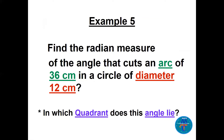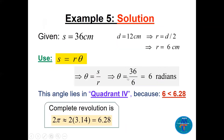Example: find the radian measure of the angle that cuts an arc of 36 centimeters in a circle of diameter 12. The second part asks in which quadrant this angle lies. We have s = 36 cm and diameter = 12, so radius r = 6 cm. Using s = rθ, theta equals s over r equals 36 over 6, which is 6 radians.